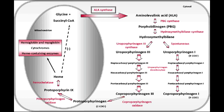What is the name of the disease in which there is a defect in Delta-Aminolevulinic Acid Synthase? Delta-Aminolevulinic Acid Synthase is defective in the condition Sideroblastic Anemia, which is an X-linked condition.